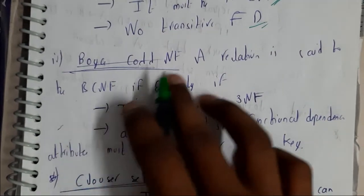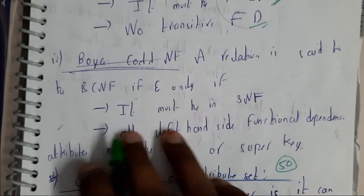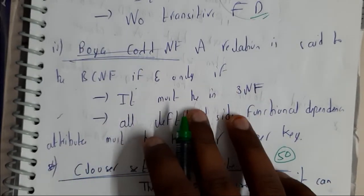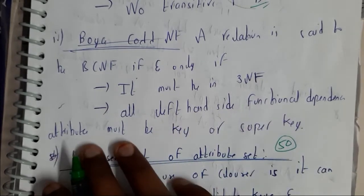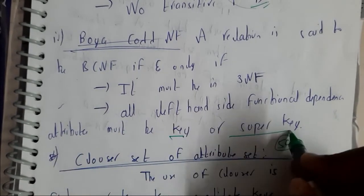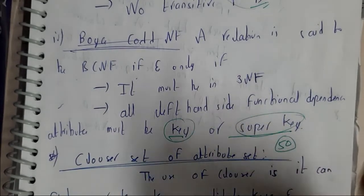The fourth type is Boyce-Codd normal form. A relation is said to be in Boyce-Codd normal form if and only if it must be in third normal form. Also the left hand functional dependency attribute must be a key or super key. This key and super key concept we will be discussing in our further tutorials.